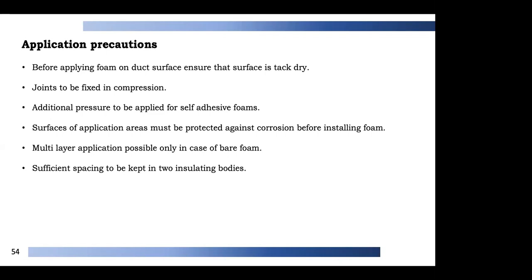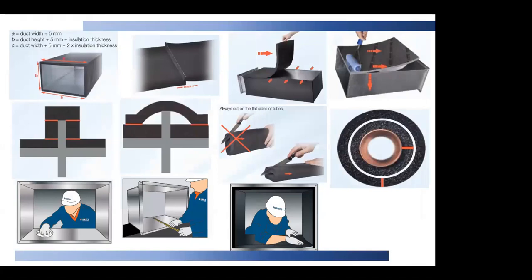Adhesive should be applied thinly and evenly on duct surfaces as well as the foam. Before applying foam on duct surface, ensure the surface is tack dry — after applying adhesive, keep the surfaces open to atmosphere for a few seconds before pressing down. Joints should be fixed in compression. For self-adhesive foams, apply additional pressure to ensure proper adhesion to the ducting or pipe area. Protect surfaces against corrosion before installing foam. Multi-layer application is possible only with bare foams — ensure insulation is not coated with lamination before adding further layers. Maintain sufficient spacing between insulating bodies.